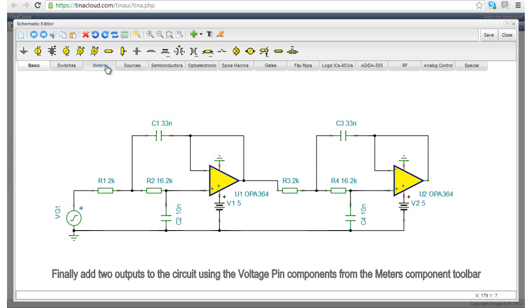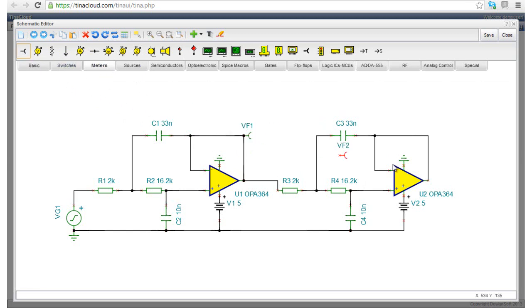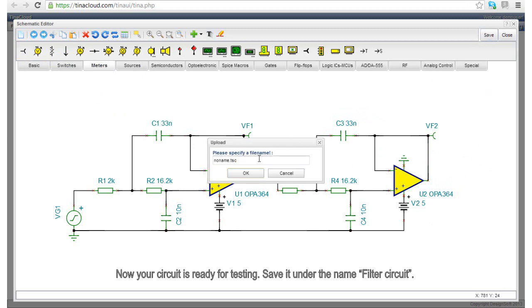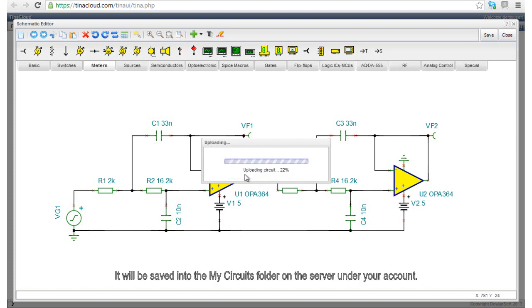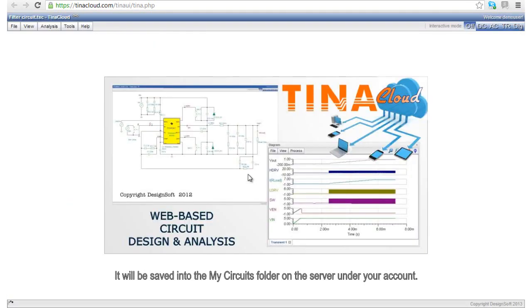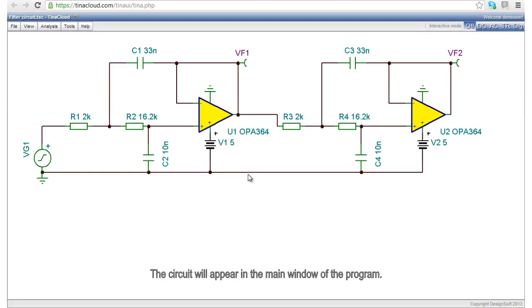Finally, add two outputs to the circuit using the voltage pin components from the meters component toolbar. Now, your circuit is ready for testing. Save it under the name Filter Circuit. It will be saved into the My Circuits folder on the server under your account. The circuit will appear in the main window of the program.